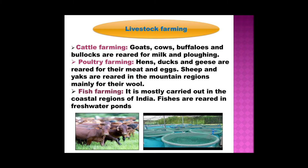So what are the three kinds of farming? They are cattle farming, poultry farming and fish farming. In cattle farming, goats, cows, buffaloes and bullocks are reared for milk and ploughing.